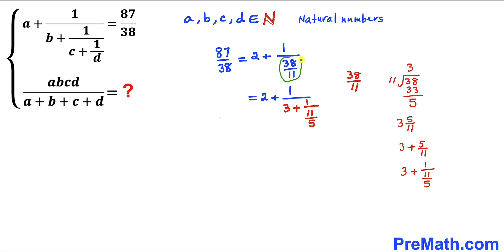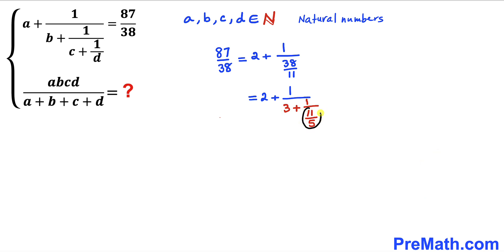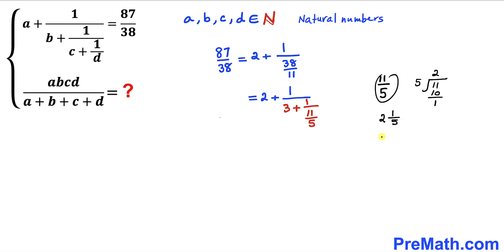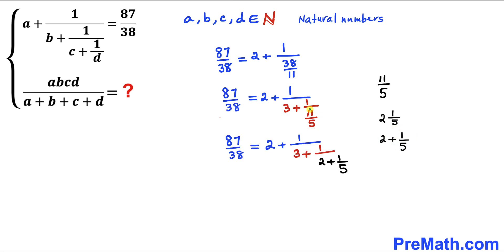We replace that part accordingly. Now let's focus on the fraction 11 divided by 5. Performing the division: 11 divided by 5 goes 2 times, giving us 10, with a remainder of 1. So this fraction can be written as the mixed number 2 and 1 fifth, or equivalently 2 plus 1 divided by 5. We replace 11 divided by 5 with 2 plus 1 fifth. So 87 divided by 38 has now been written as a nested continued fraction.